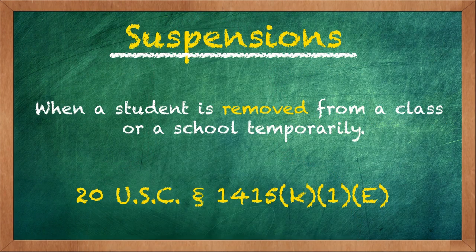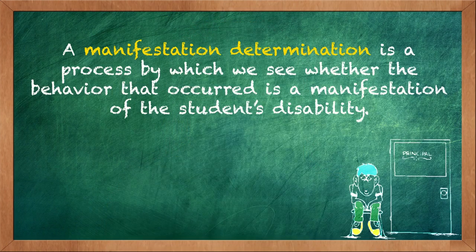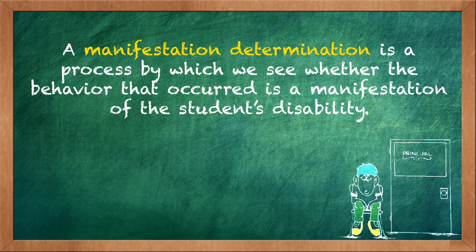Now let's discuss suspensions. This is when a student is removed from a class or a school temporarily. For students with disabilities, suspensions should include a manifestation determination. We're going to discuss manifestation determination in a later unit, but for now, know that a manifestation determination is a process by which we see whether the behavior that occurred is a manifestation of the student's disability or that it's caused by the student's disability.